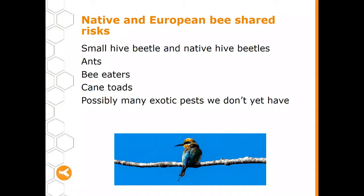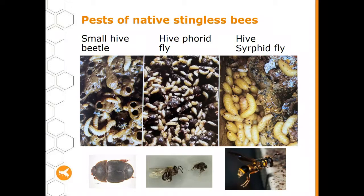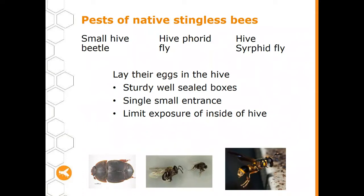There are also some pests specific to stingless bees and not European bees: the hive phorid fly and a syphrid fly. These flies come to the hive, lay their eggs inside, and the larvae eat up the hive contents. To minimise their impact, make sure you have a really well-built, sturdy, well-sealed hive with just one small entrance. Also limit the time the hive is open for any reason, so those pests don't get in.